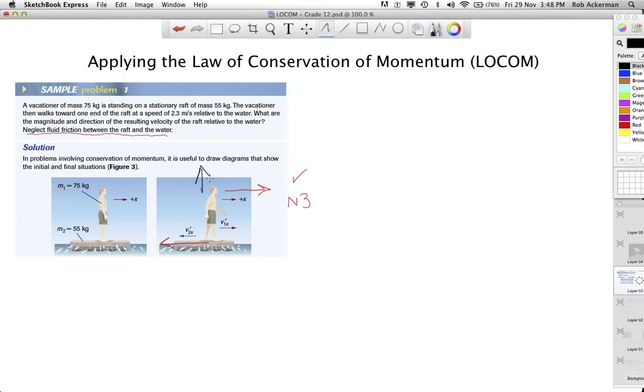The buoyant force of the water is balanced by gravity. There is no friction, and therefore, there are no net external forces. Therefore, LOCOM applies. Which means we can write that P total in the beginning equals P total in the end, or P' total. So let's do that. What are the objects involved here? Well, there's the momentum of the raft, and there's the momentum of the vacationer. If you add those up, they're supposed to be equal to the momentum prime of the raft, and the momentum prime of the vacationer. Now, no one's moving in the beginning. So mass of raft, velocity of raft will be zero, and mass of vacationer, velocity of vacationer will be zero. This side of the equation is easy.